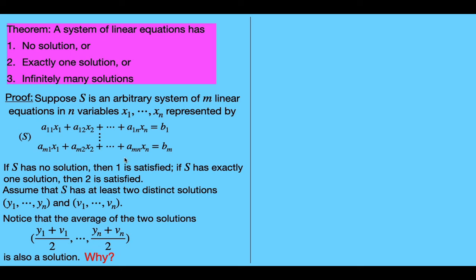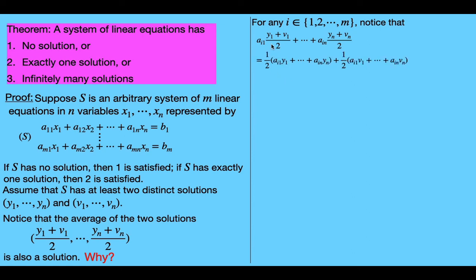we want to show that every equation in the system s will be true. To do this, we look at the i-th equation for an arbitrary i. For any i from 1 to m, we plug in this n-tuple on the left side of the i-th equation. When we factor out the 1/2 and rewrite it, we have 1/2 times this sum.